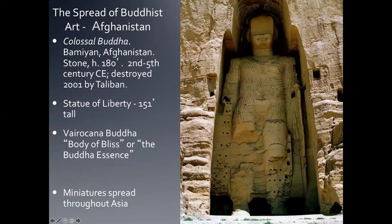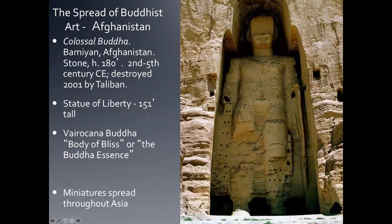Buddhist art spread outward. In Afghanistan there was a colossal Buddha — carved from living rock — 180 feet tall. For reference, the Statue of Liberty is 151 feet tall. This one is known as the Body of Bliss or the Buddha Essence Buddha. It's common for these rock-cut temples, and this one may have influenced the ones we saw in the Wei Dynasty, because miniatures sold along the Silk Road may have put monks in contact with those who worked on this sculpture.